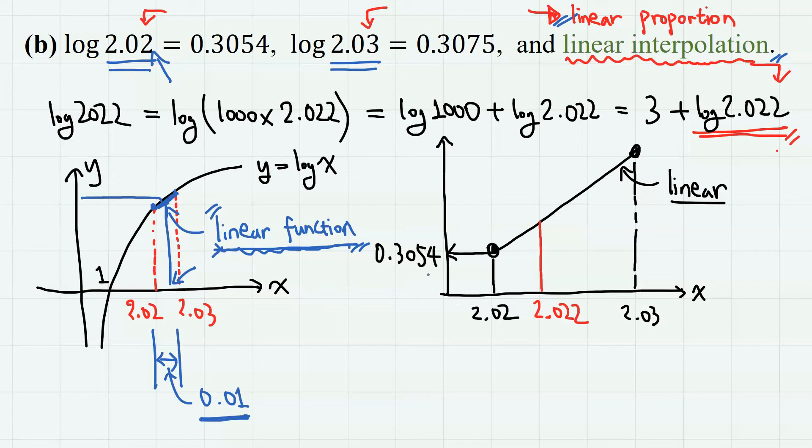It is given that log 2.02 is 0.3054 and log 2.03 is 0.3075. In order to calculate log 2.022, let's denote this increment as x.